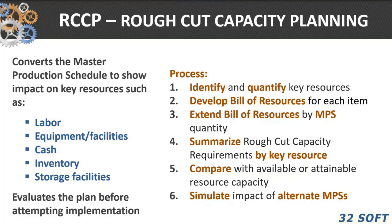Rough cut capacity planning is the tool we use at the master schedule level, but the same kinds of concepts apply at the resource requirements level or at the group or family level. This converts the master production schedule into the impact on key resources — labor, equipment, cash, inventory — several different units of measure. This is exactly what QAD does in the background to calculate the capacity requirements for each level in the ERP.